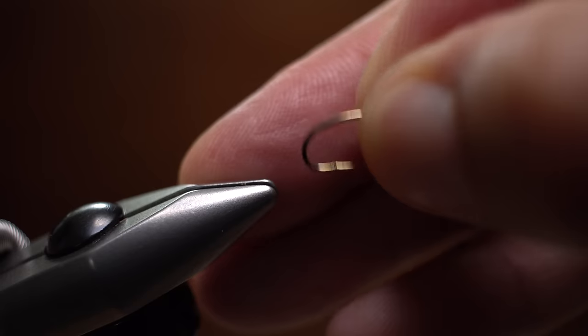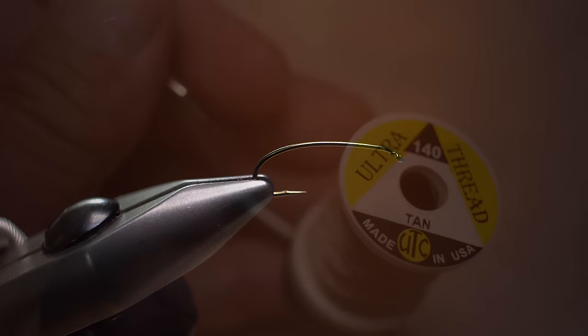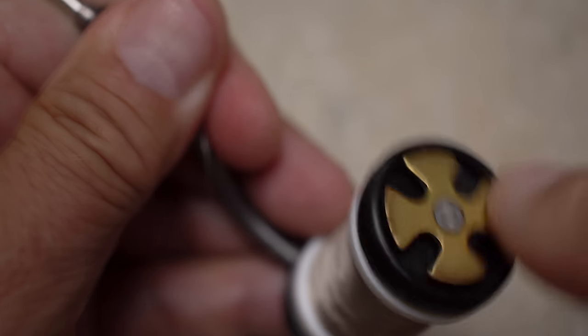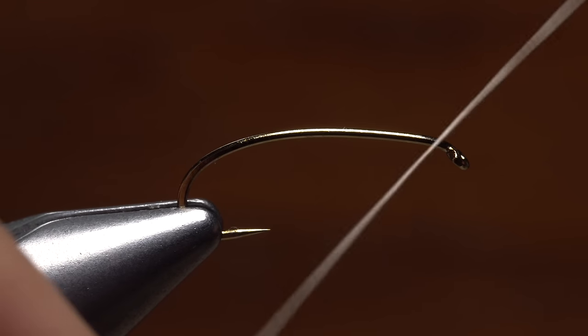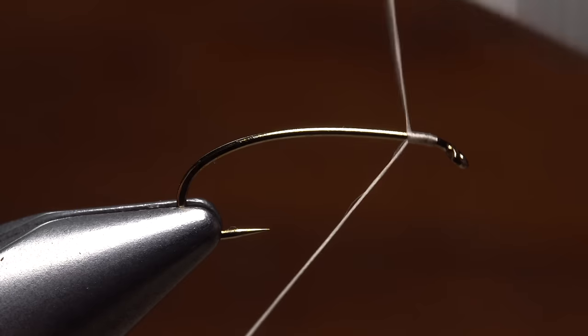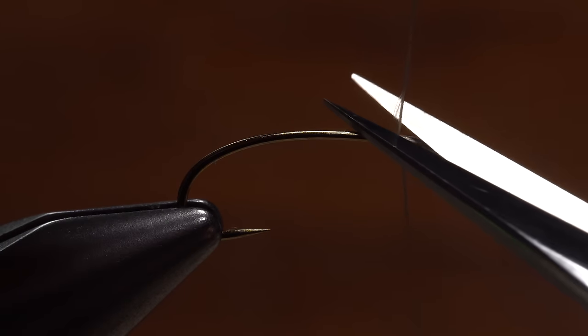Start by mashing the barb and getting the hook firmly secured in the jaws of your tying vise. For thread I've loaded a bobbin with a spool of tan UTC 140 denier. Get your thread started on the hook shank leaving a small space behind the eye. After taking a few wraps rearward, snip the excess tag end off close.